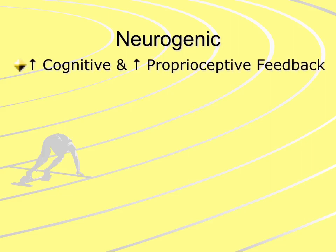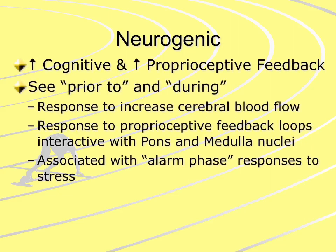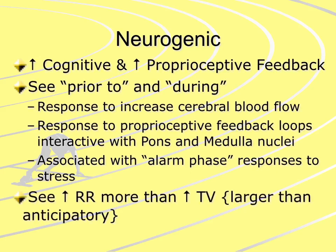The neurogenic stage occurs when we have an increase of cognitive functioning and an increase of proprioceptive feedback. We see this both during and prior to exertion, but very rarely post-exertion. It's done in response to proprioceptive feedback coming from muscle activity in the extremities, and is associated with the alarm or stress response. We see a continual increase in respiration rate but also an increase in tidal volume — the tidal volume increase here is larger than in the anticipatory set, but much less than what we see with the metabolic response.